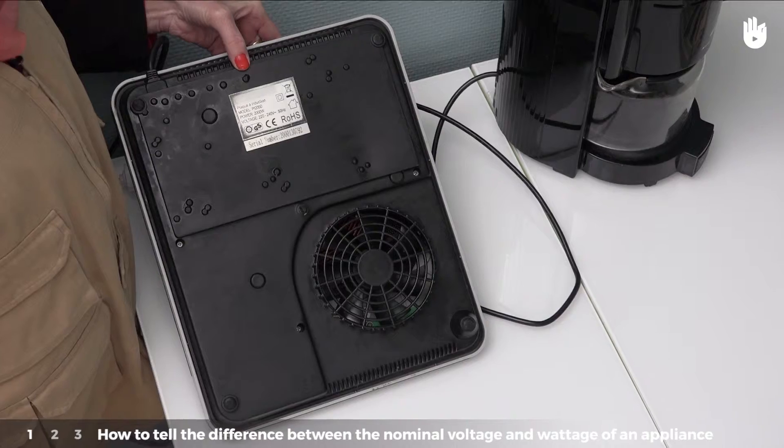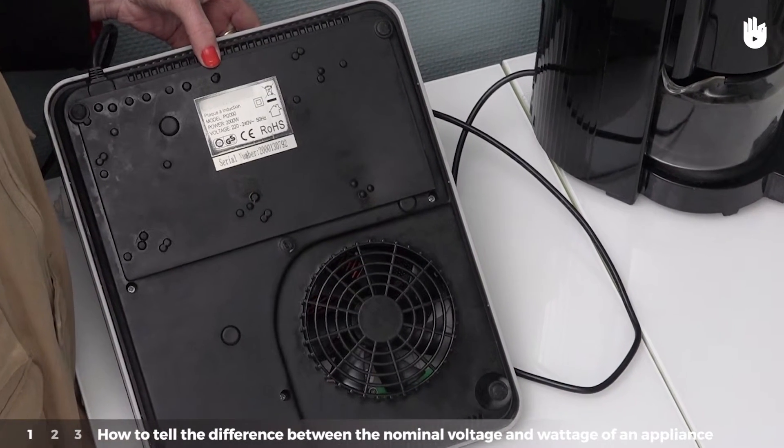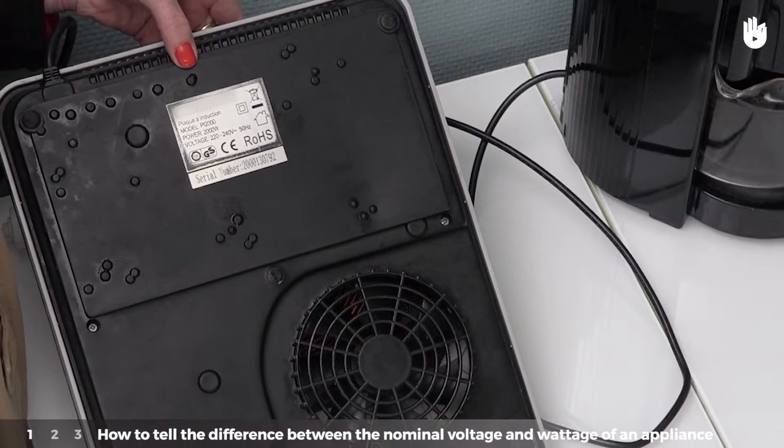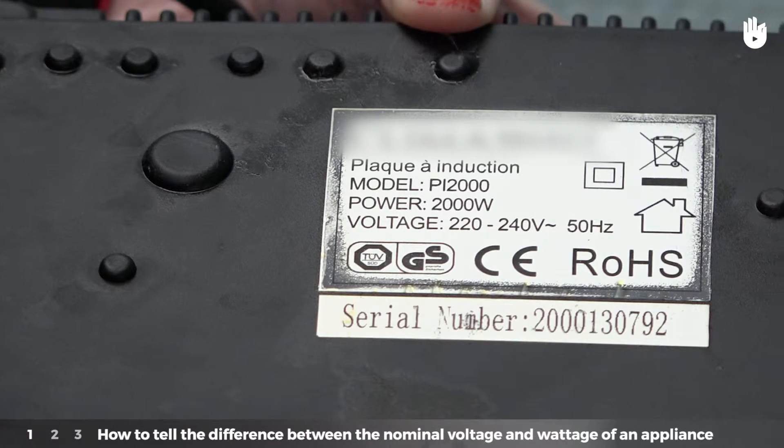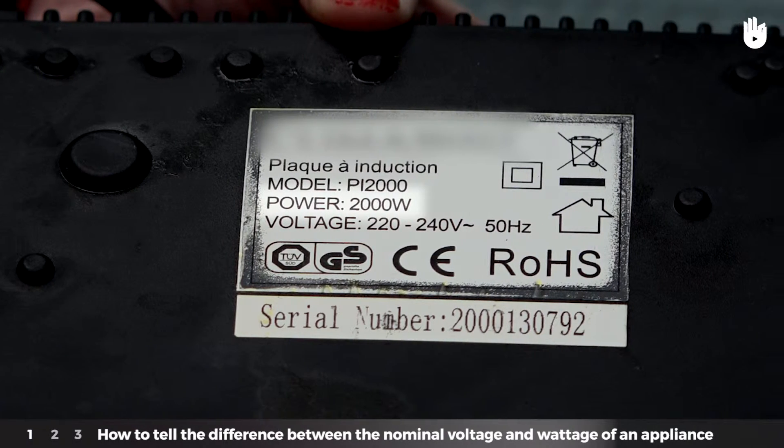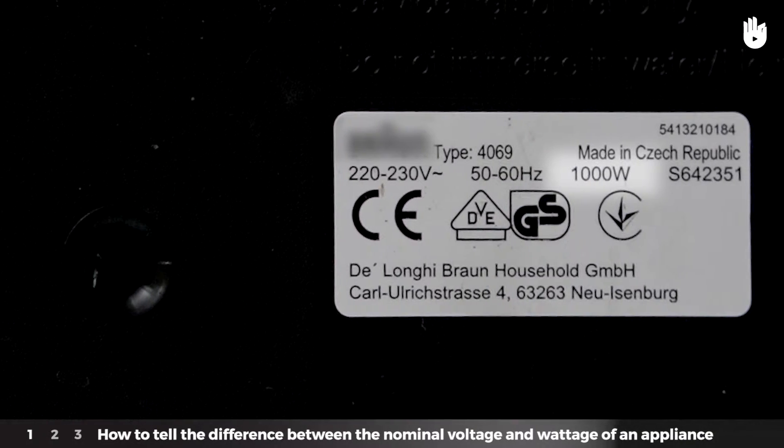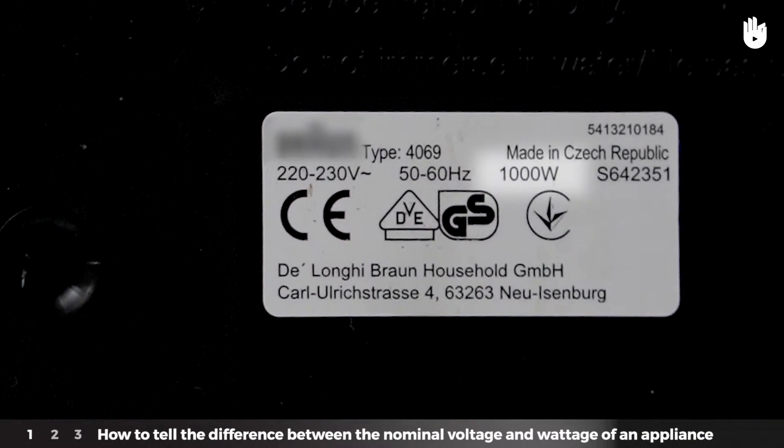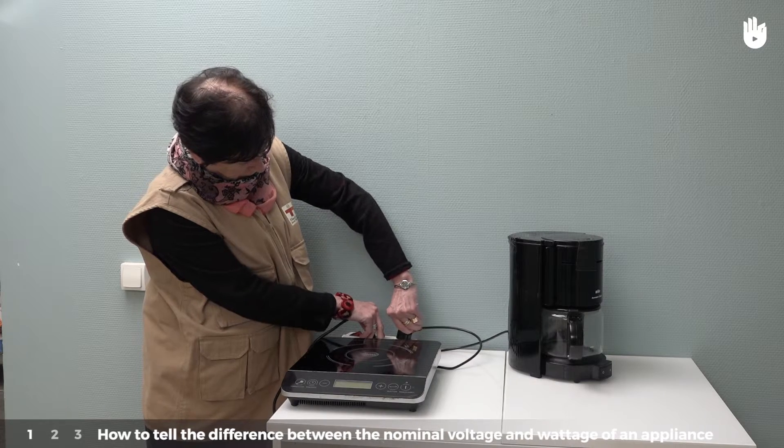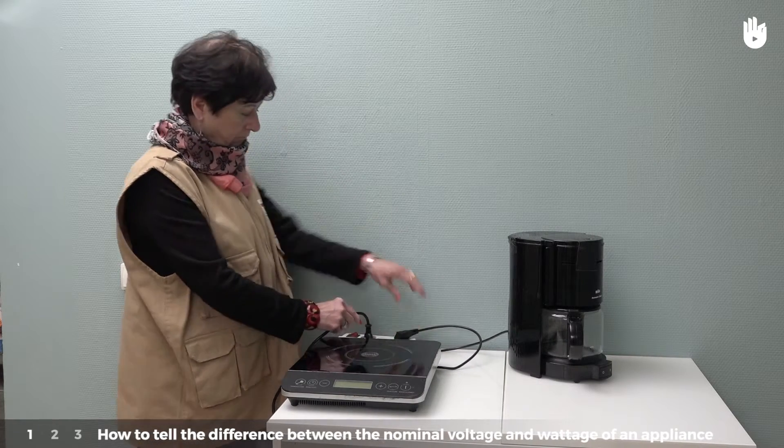The nominal wattage is the normal wattage for use of the appliance. It is expressed in watts. This information can be found on the appliance's data plate. This corresponds to the electrical energy exchanged during the use of the appliance. This is the energy that corresponds to the appliance's consumption.